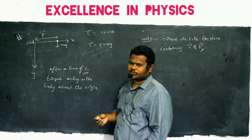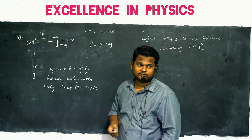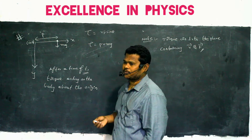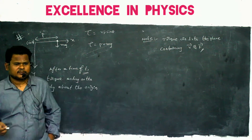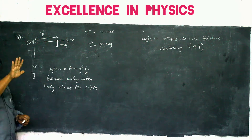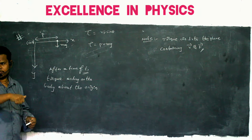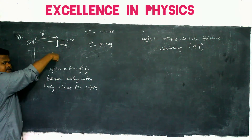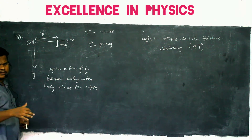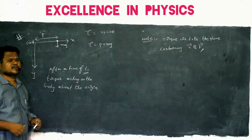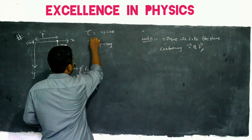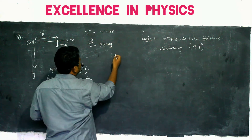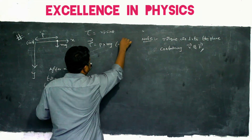The direction of torque: using R dash cross F dash — this is R dash along x-axis, F dash is downward — the thumb is perpendicular and inside the board. So torque equals P into Mg in the minus K cap direction. If plus K cap is perpendicular and outside the board, then minus K cap is perpendicular and inside the board.